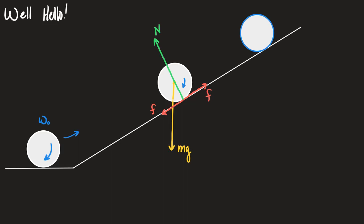Now, before we go any further — if you think the friction goes up the ramp, put a thumbs up in the window; if you think it goes down the ramp, put a thumbs down. We're not evenly split: I've got 20 people who think it goes down the ramp and 10 who think it goes up the ramp. So the clear winner by vote — down the ramp — by a two-to-one margin.